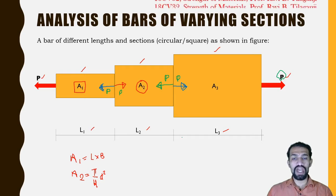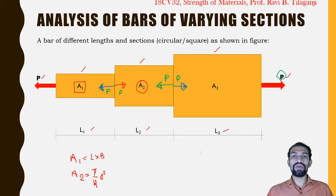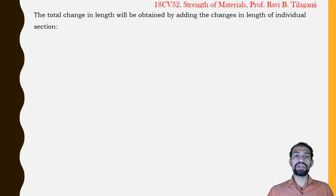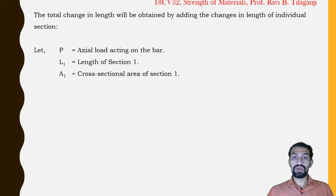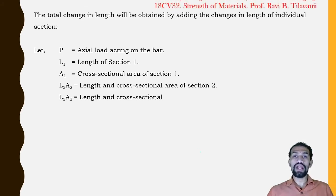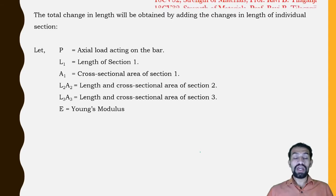This is the derivation part — how to get the equation for analysis of bars with varying sections. The total change in length is obtained by adding the changes in length of each individual section. Let P be the actual load acting on the bar; L1, L2, L3 are the lengths of sections 1, 2, and 3; and A1, A2, A3 are the cross-sectional areas of sections 1, 2, and 3.